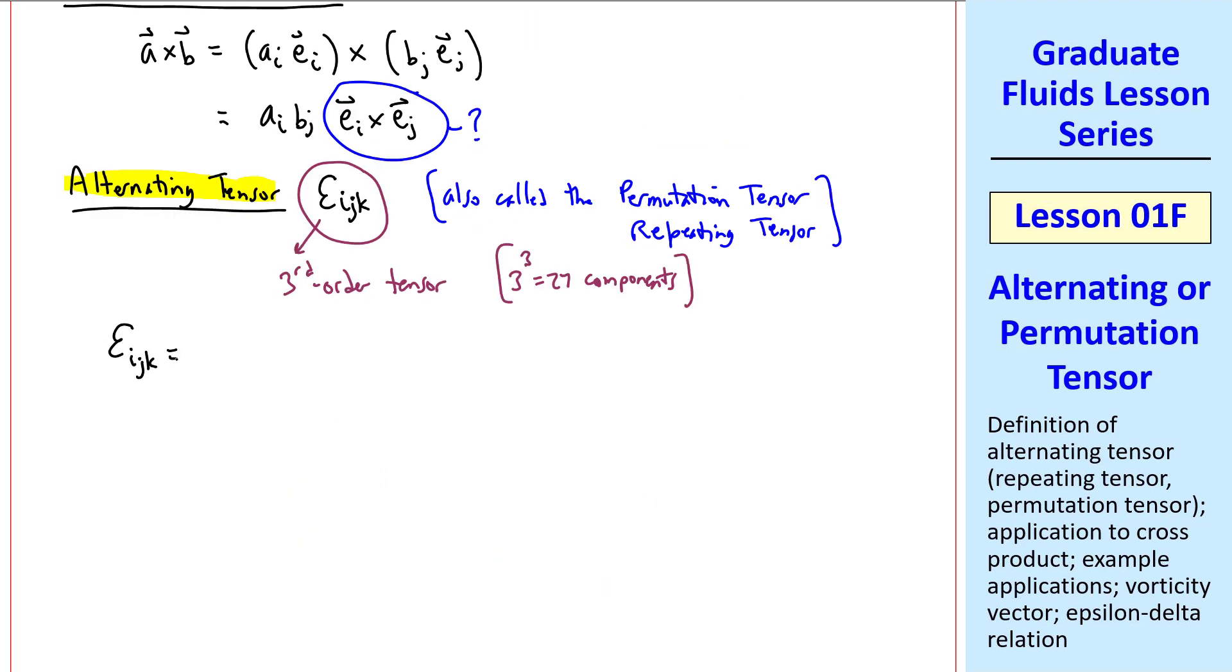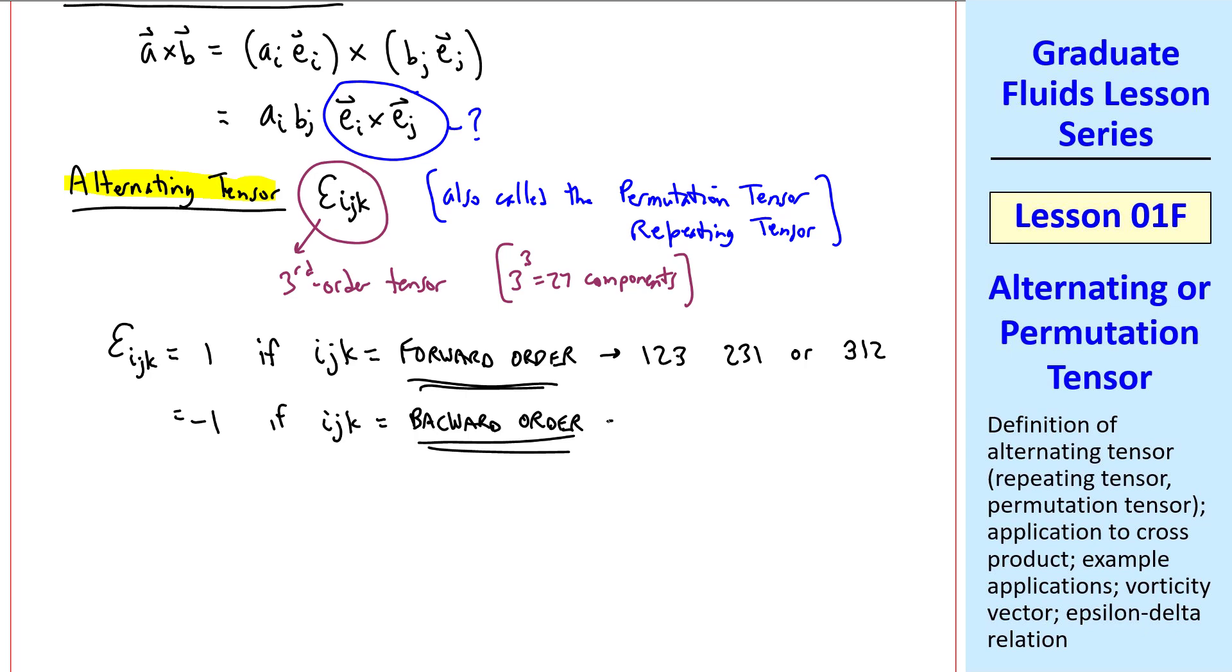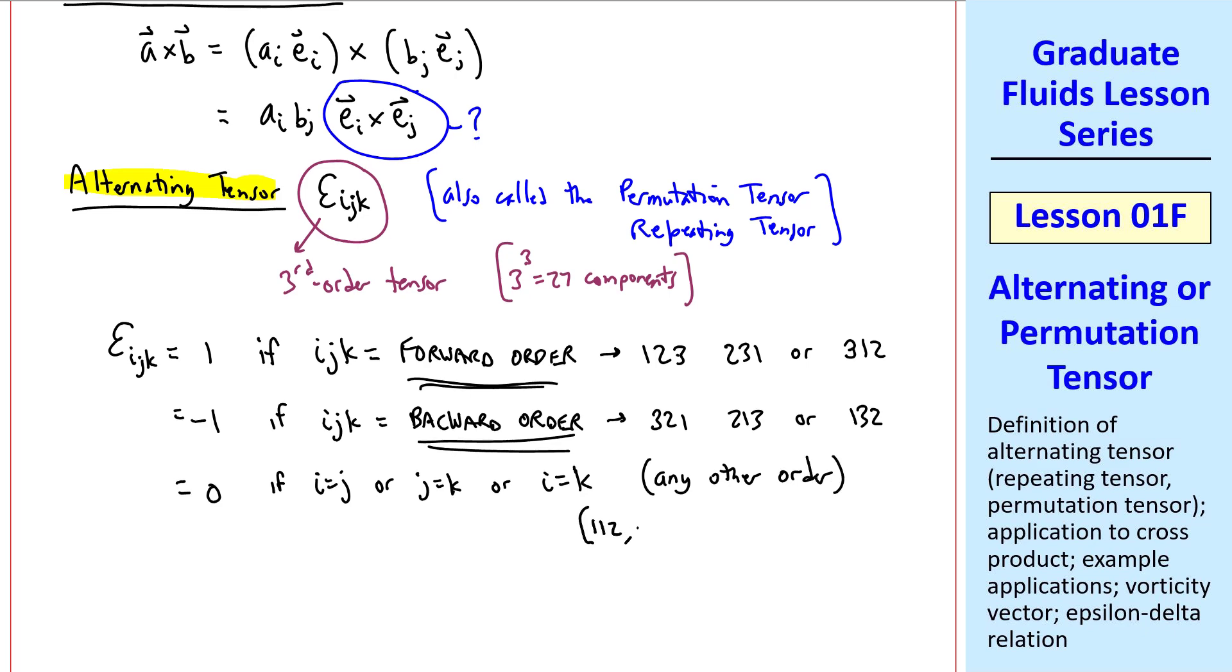Here's how we'll define it. Epsilon_ijk is 1 if i,j,k is in forward order, which means 1,2,3, 2,3,1, or 3,1,2. It's equal to negative 1 if i,j,k is in backward order, 3,2,1, 2,1,3, or 1,3,2. And it's zero if i equal j, or j equal k, or i equal k. In other words, any other order, like 1,1,2, 1,2,1, 1,3,3, etc. Out of the 27 possible components, 3 are 1, 3 are negative 1, all the others are zero.